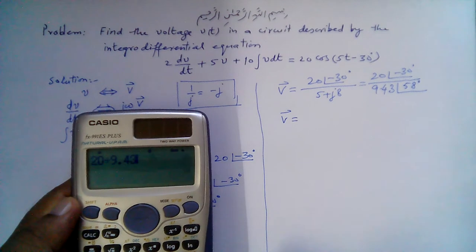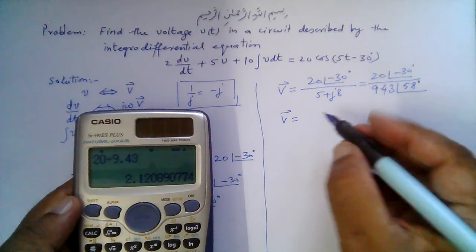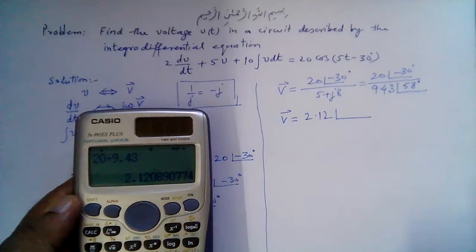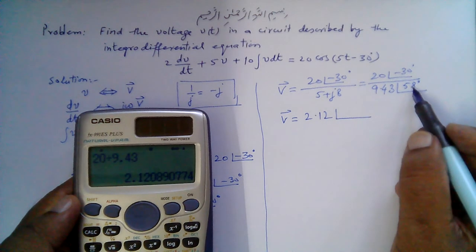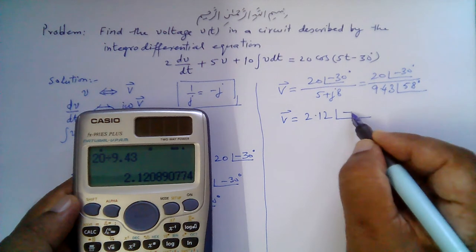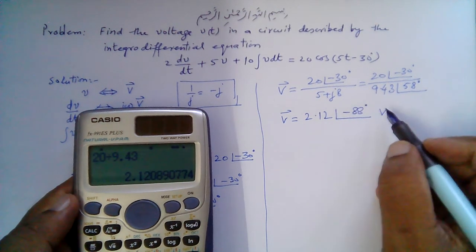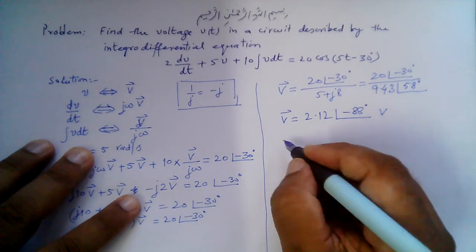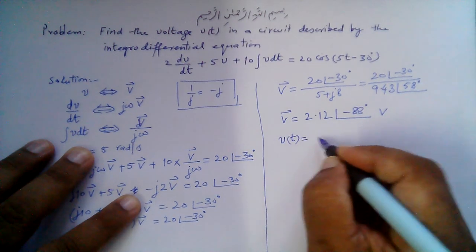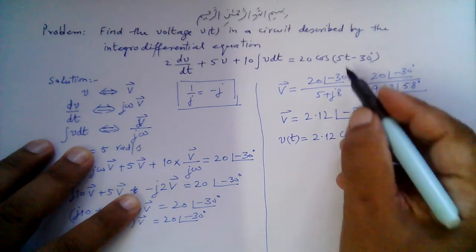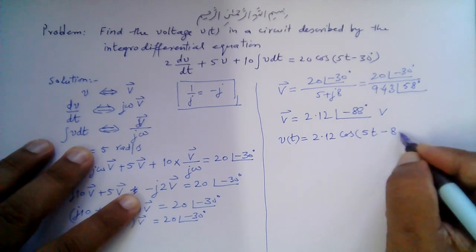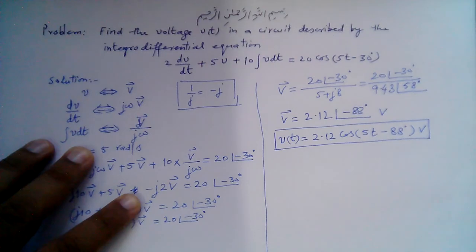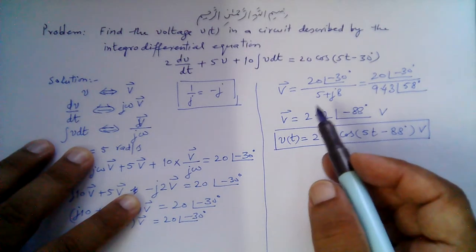Therefore V̄ = 20/9.43 ∠(-30° - 58°) = 2.12∠-88° volts. This is the answer in the phasor domain. Converting back to the corresponding sinusoid in the time domain: v(t) = 2.12cos(5t - 88°) volts. Using this phasor transformation, we have found the solution to the integro-differential equation.